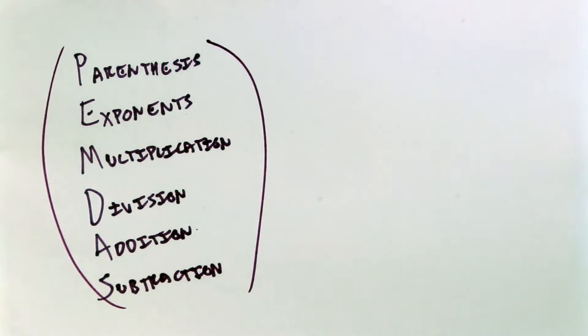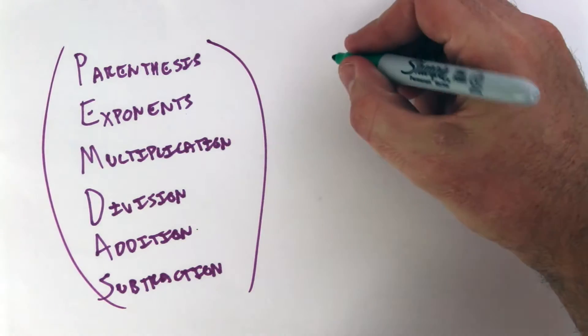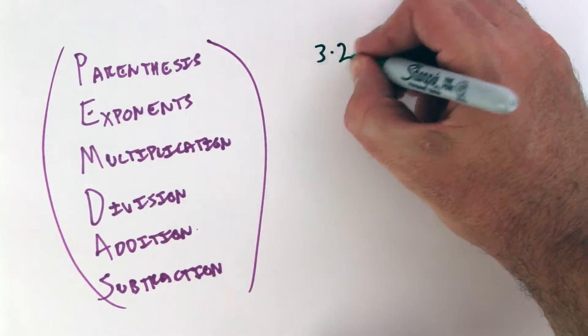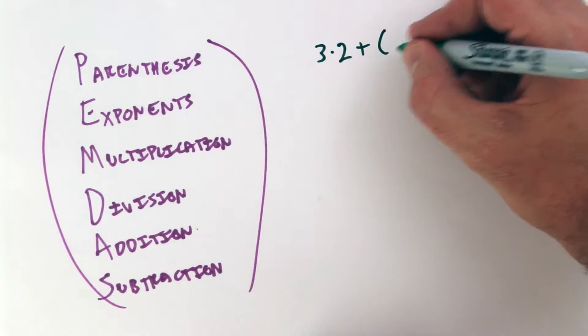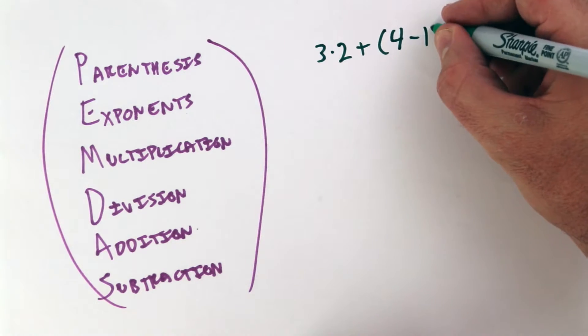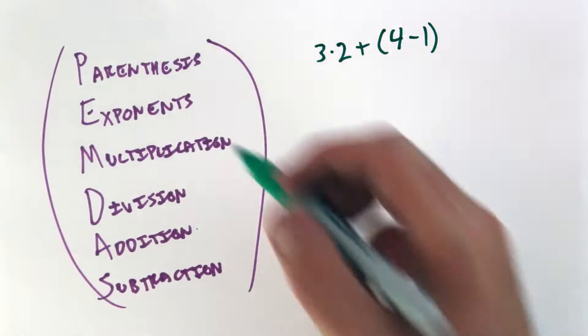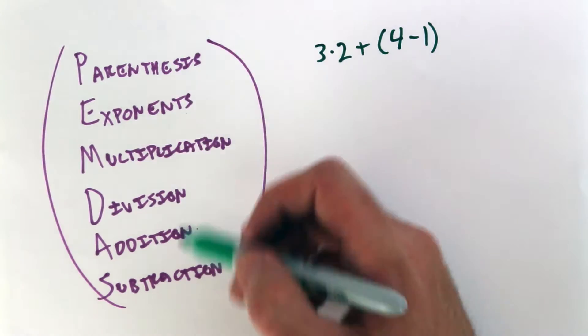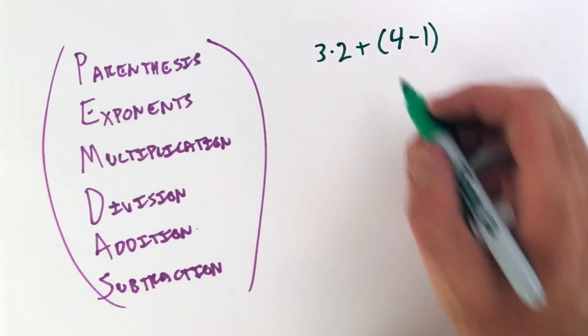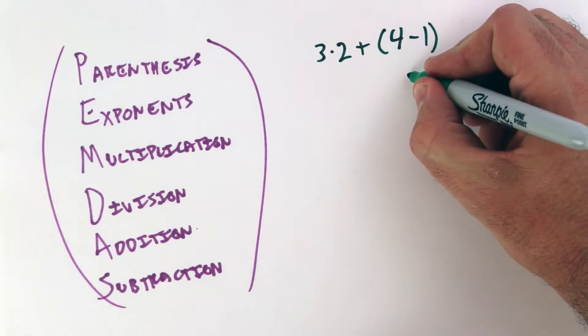So let's look at an example. Say you're given the problem 3 times 2 plus 4 minus 1 in parentheses. So we look at order of operations. Remember PEMDAS? Parentheses first. 4 minus 1 is 3.